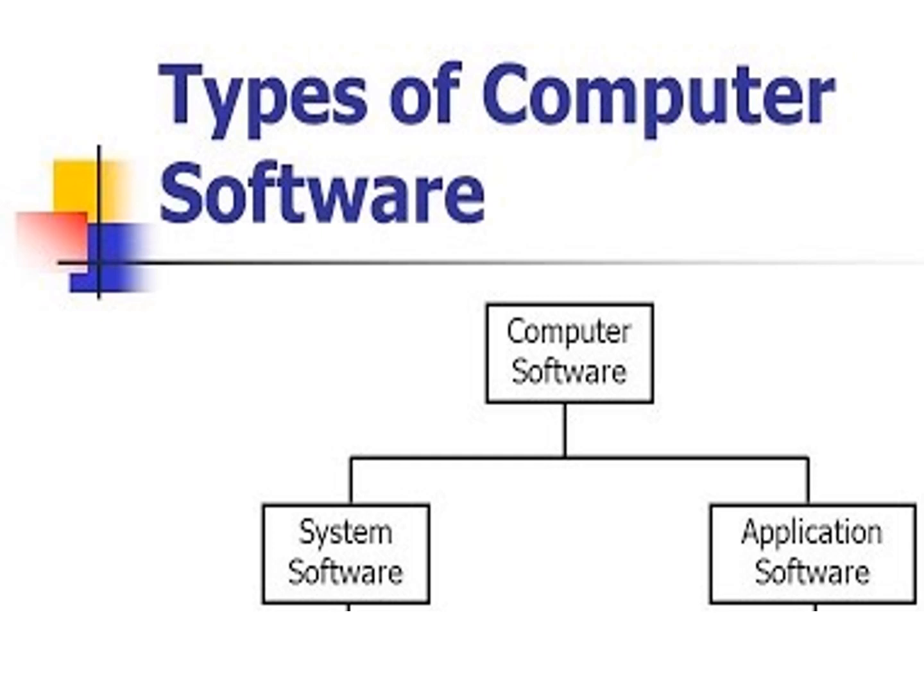Types of computer software. Computer software is classified into two types: system software and application software.